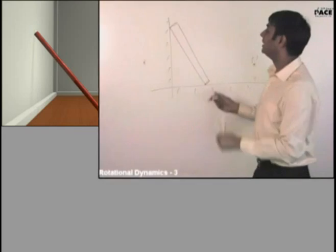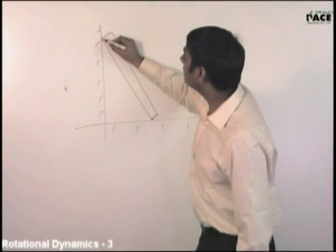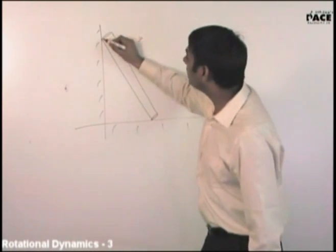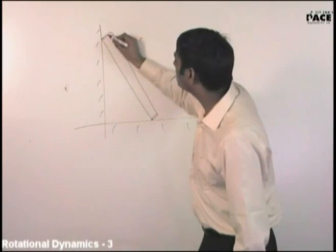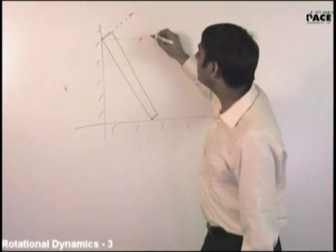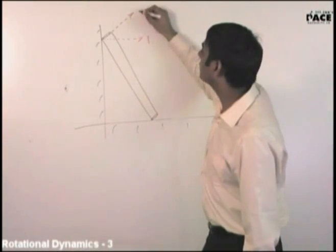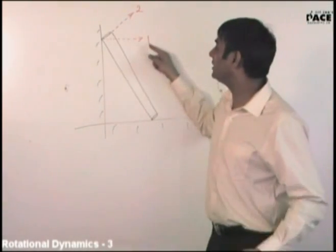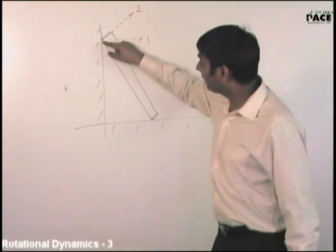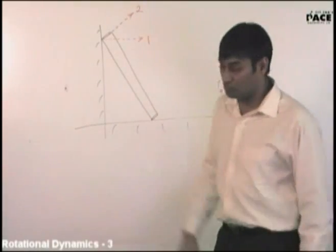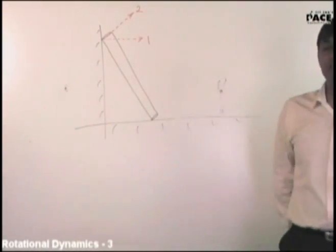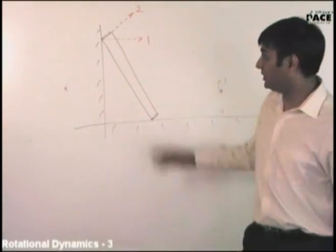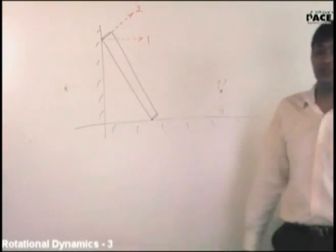Here is an interesting question. One normal to the wall is perpendicular to the wall - that is direction 1. Another normal perpendicular to the rod seems to be direction 2. So the normal force: will it act in direction 1 or direction 2? Normal to the wall is perpendicular to the wall - direction 1. Perpendicular to the rod is direction 2. When we say normal reaction, it has to be normal to both. So which direction will the normal reaction act, and why?